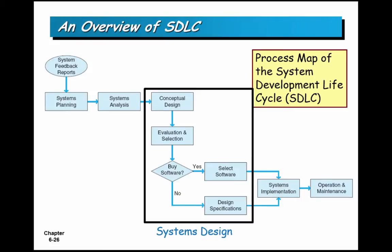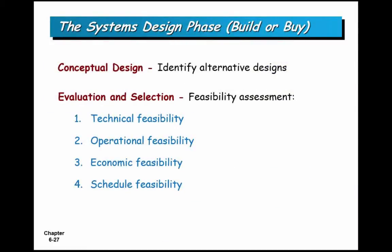The design phase starts with a conceptual design, then evaluation and selection, and the build-or-buy decision — all part of systems design. In the conceptual design, you look at different technology solutions: internet, mainframe, C++, Microsoft Access, and so on. You design based on a variety of possibilities. Once again, you do a feasibility study after examining those design possibilities, eliminating options that don't make sense for any of the four feasibility reasons.